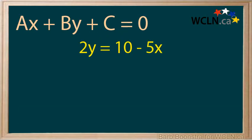Let's start with the linear equation 2y = 10 - 5x. First, get the x and y terms on the left-hand side of the equation. Add 5x to both sides of the equation in order to do this.